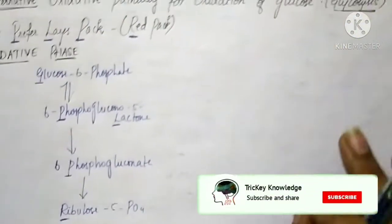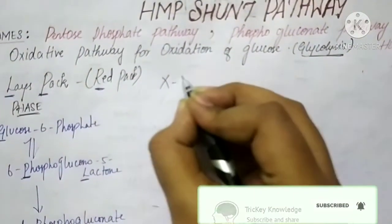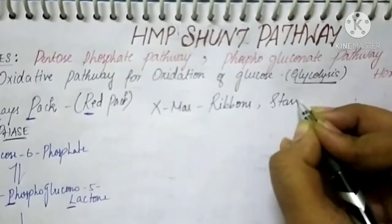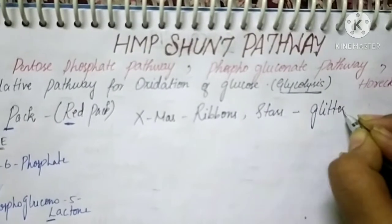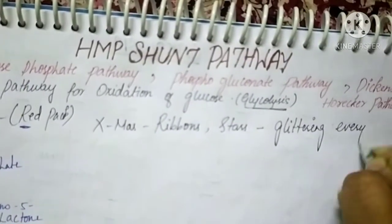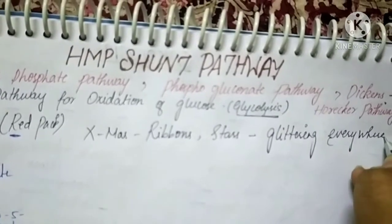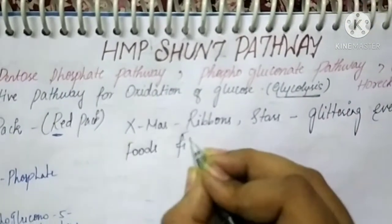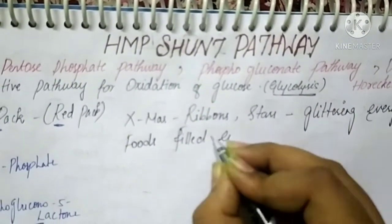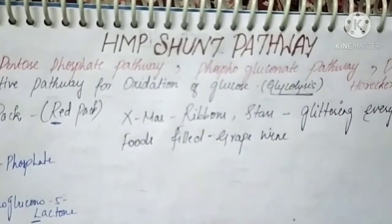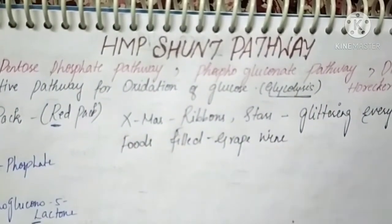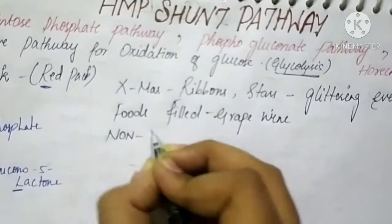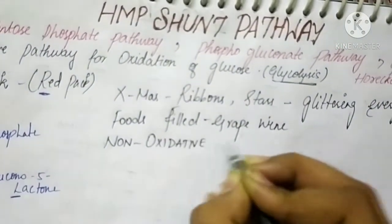Now let's see the non-oxidative phase. Remember this sentence: 'X-mas season — it is full of ribbons, stars, glittering everywhere, plus foods filled with grapevine.' This is the mnemonic for the non-oxidative phase.